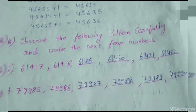Question number 8: the pattern starts at 79,985, then 79,986. Adding 1 each time: 79,987, 79,988, 79,989, and then 79,990.